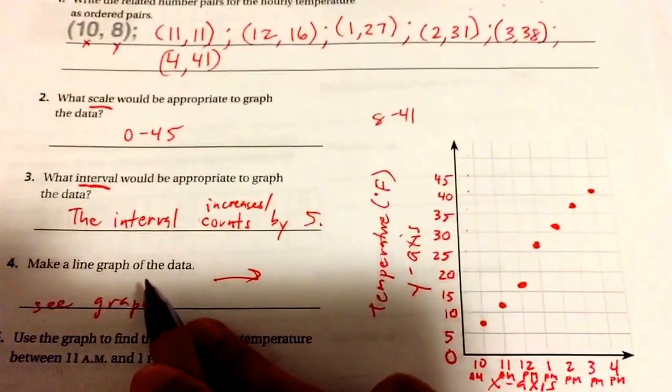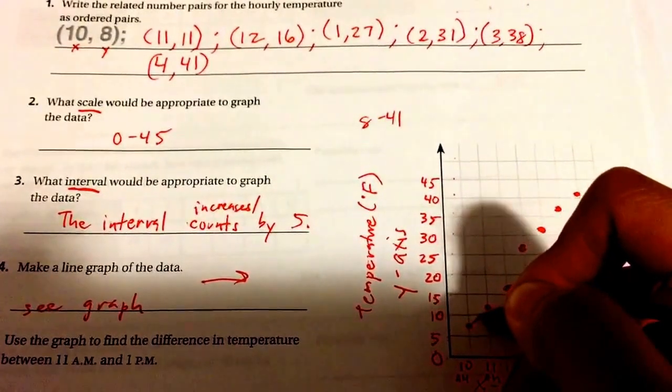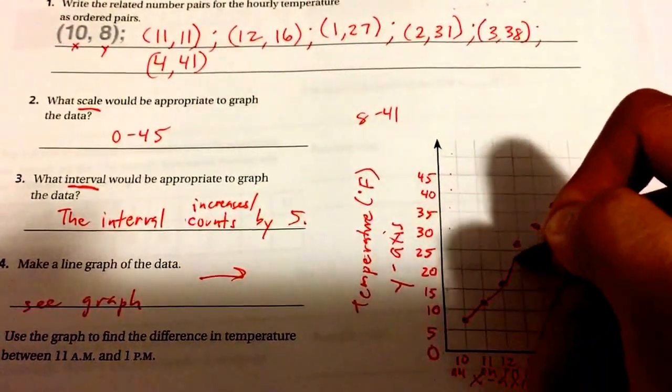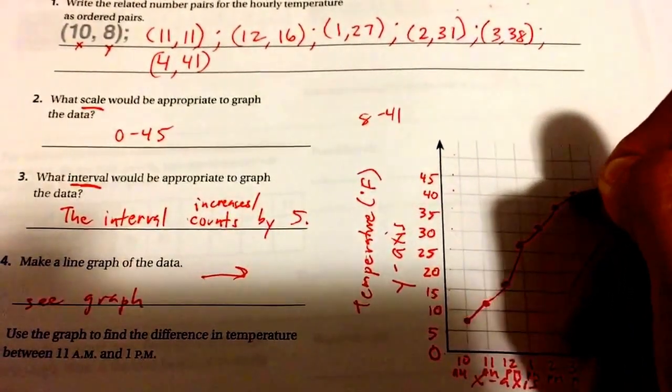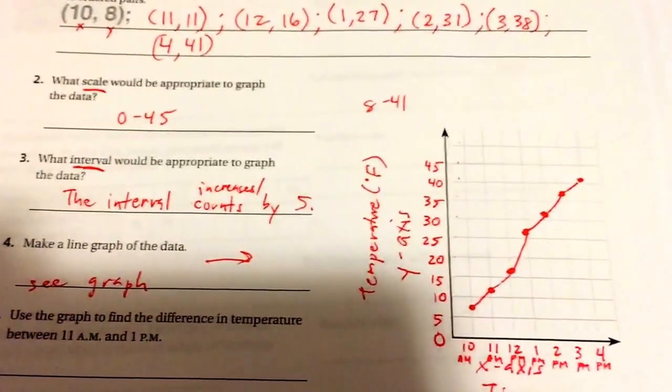And your next thing to make it a line graph is to connect the dots. You can connect it a little better, especially if you have a ruler and you're not holding a phone.